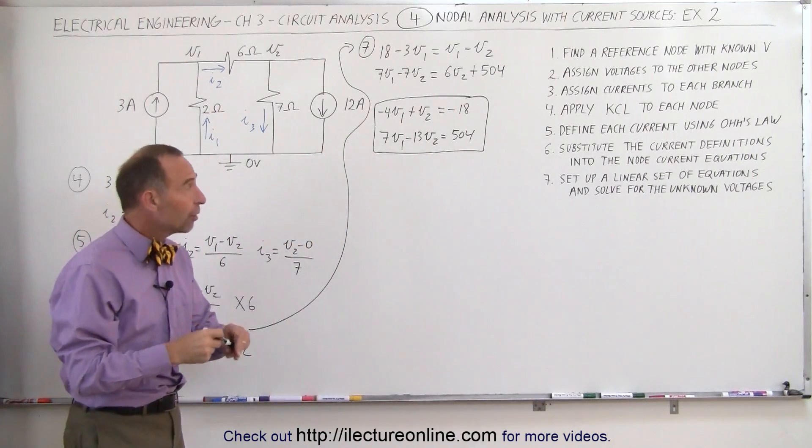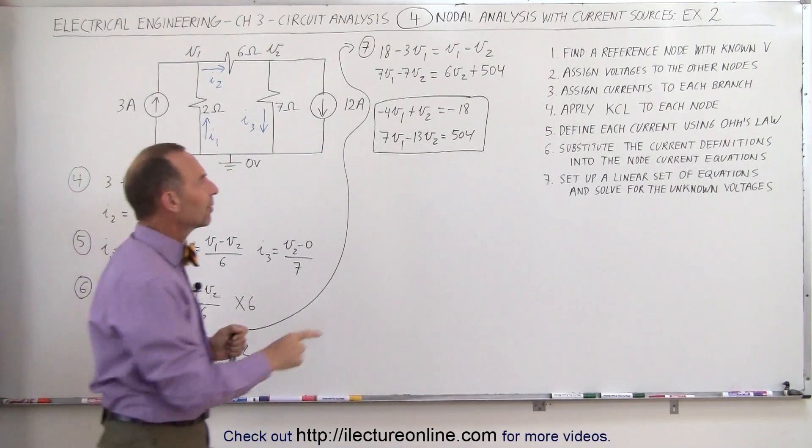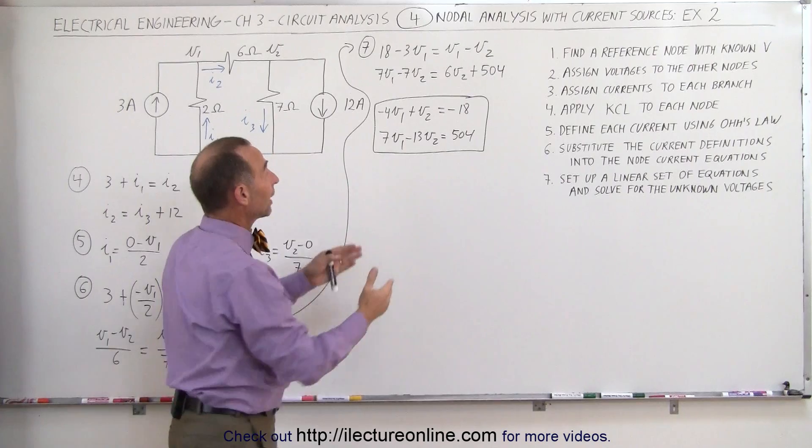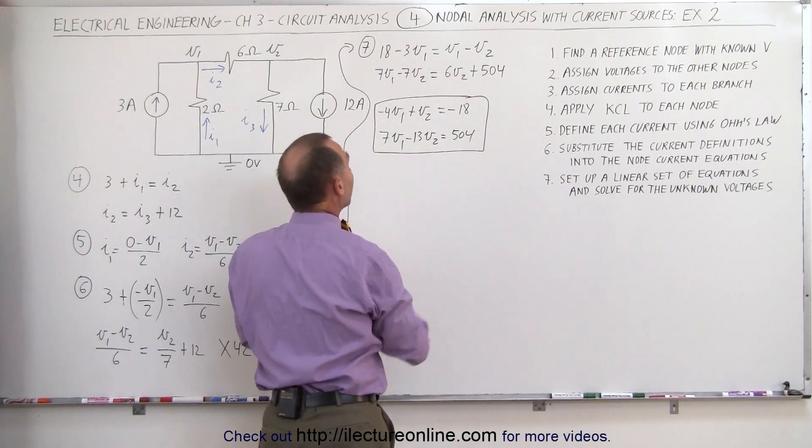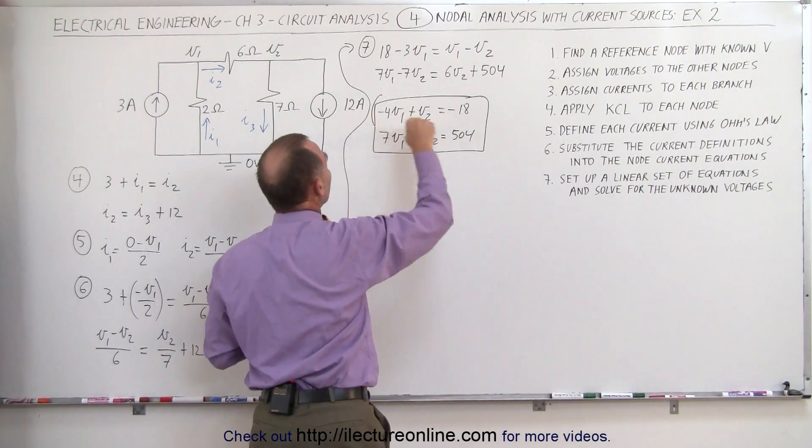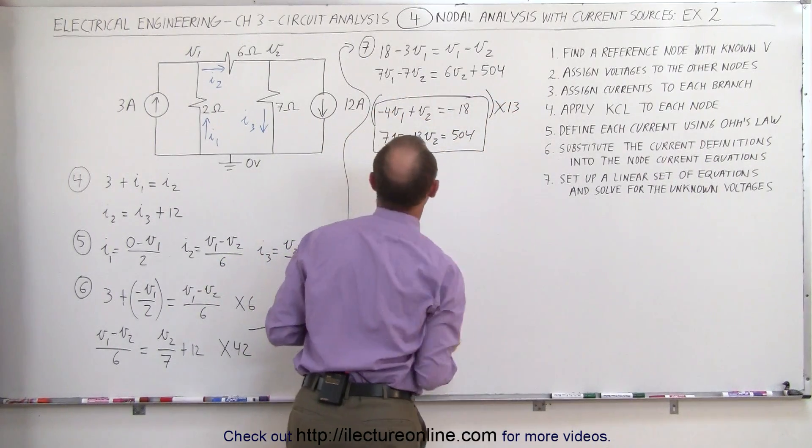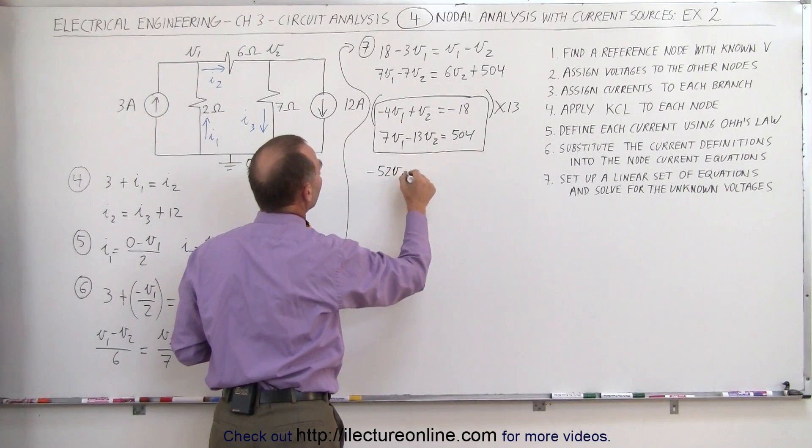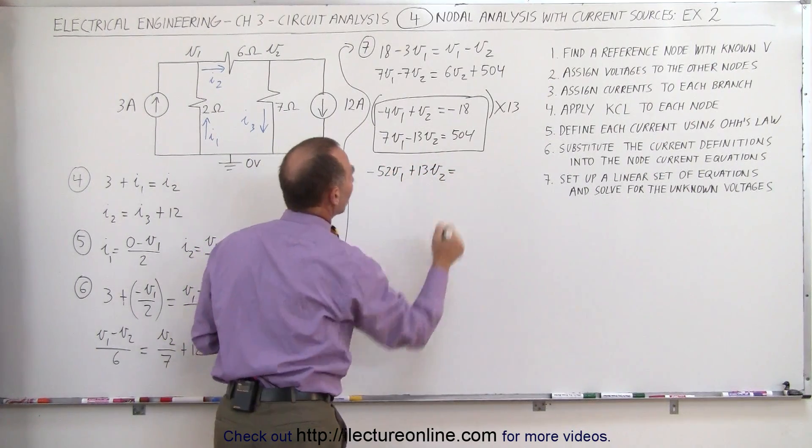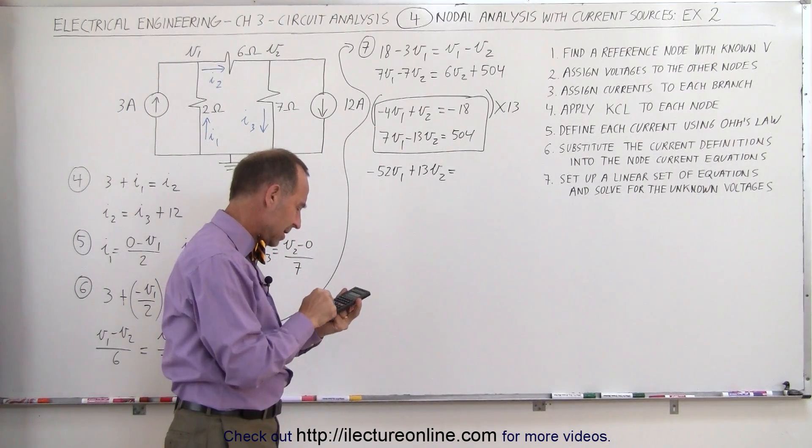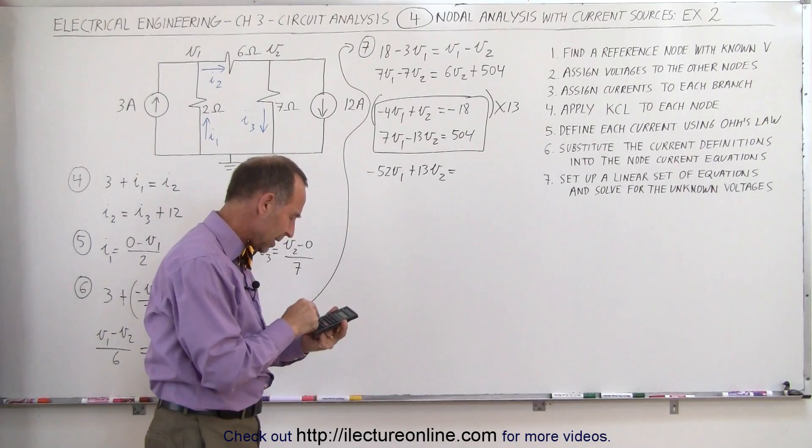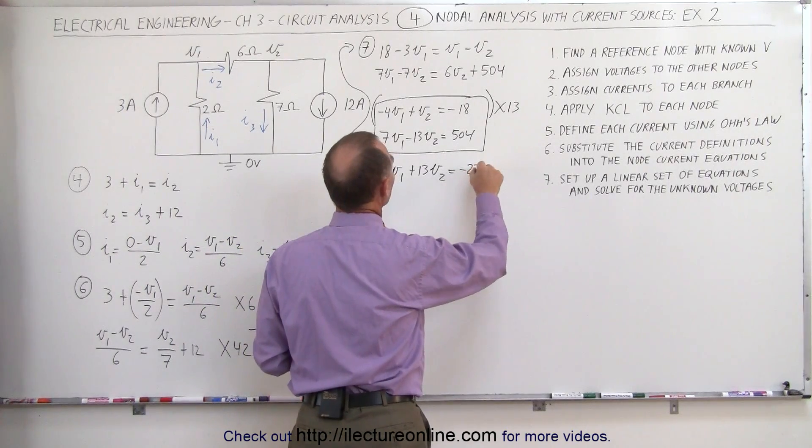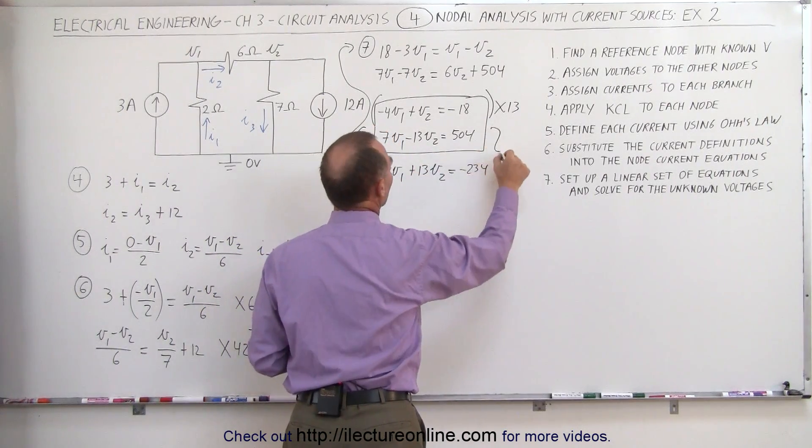Now again, there's a multitude of methods by which we can solve two equations and two unknowns, but what I'm seeing here is I'm seeing a minus 13 V2 and a plus 1 V2. I'm just tempted to go ahead and multiply the top equation by 13, add the two together and then eliminate V2 that way. So let's do that. Let's multiply the top equation times 13. When we do that, 13 times 4, that's 26 times 2, which is 52, minus 52 V1 plus 13 V2 equals 18, minus 18 times 13, 18 times 13 equals 234.